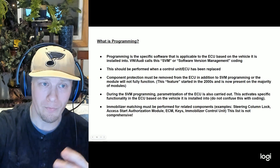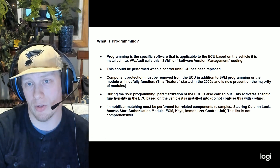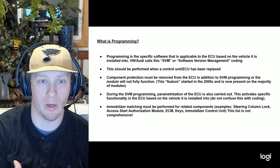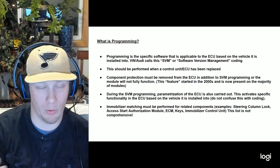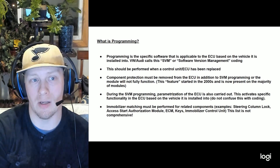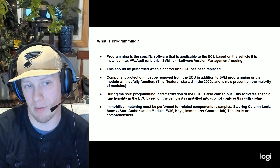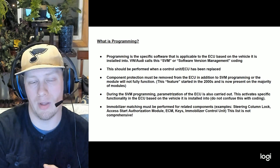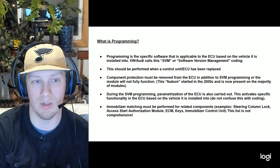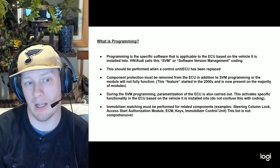Now moving to programming, which is twofold. First there's software version management — a specific string of letters and numbers typed in to pull a version of software for a control unit. Software gets downloaded and there's matching through a database that allows the control unit to get programmed. The SVM code is usually dealer-specific; they often won't give these out, but sometimes you can find them in TSBs, or retrieve them through ODIS, or get them from the parts department.